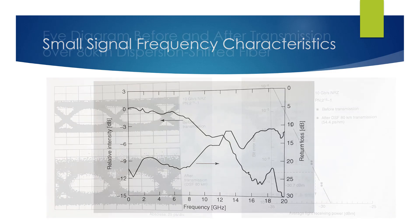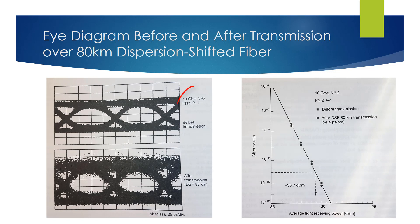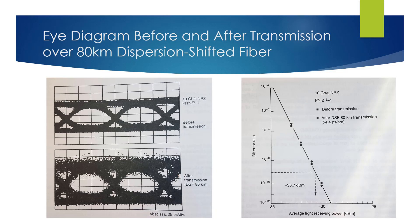On a 10 Gbps transmission experiment using the module, the input electric signals were 10 Gbps NRZ pseudorandom signals. The output from the module was amplified by an EDFA and then input to an optical fiber line. The link length was 80 km using 1.55 micron dispersion shifted fiber. The front-end receiver converted the optical input signals to electric signals, which were passed through a timing extraction circuit and then to a decision circuit.